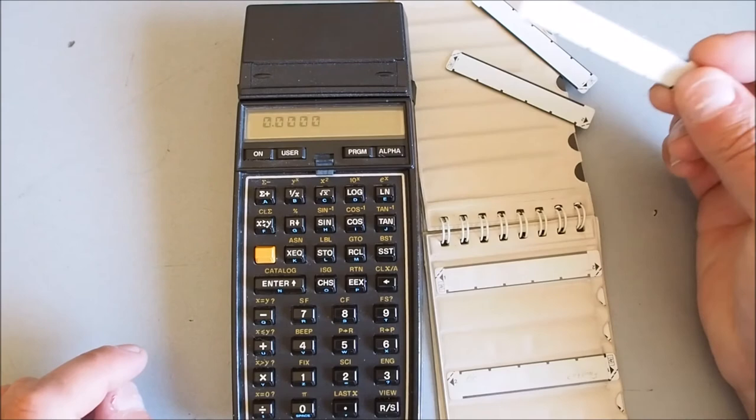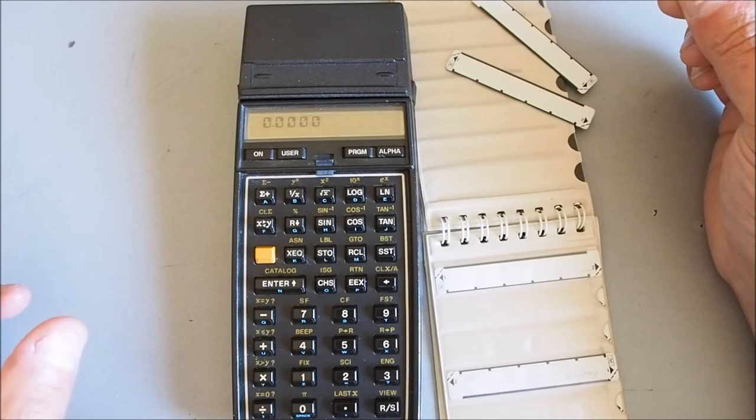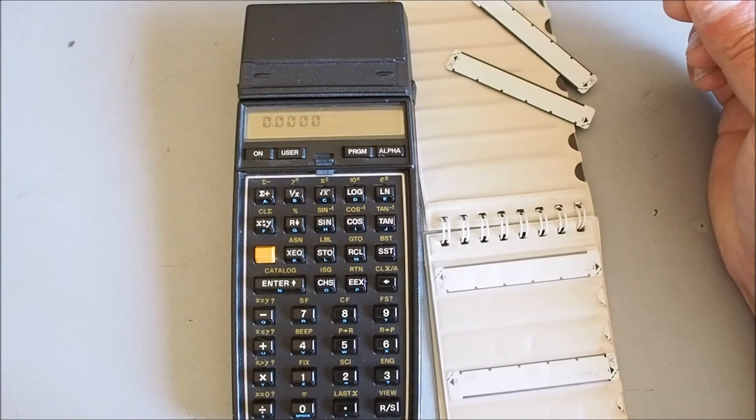You've got a set of data storage registers and you can access those directly. Any register from 0 to 99 you can access directly and the remaining data registers that you may have allocated you can access indirectly if it's above 99.